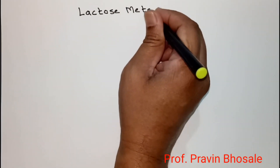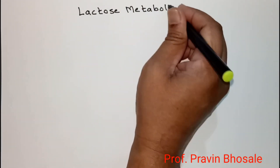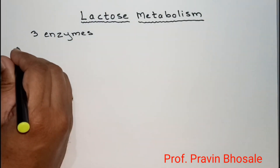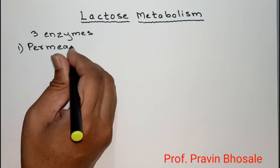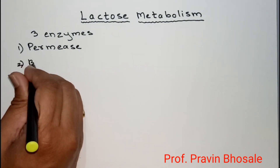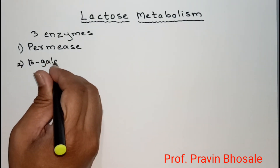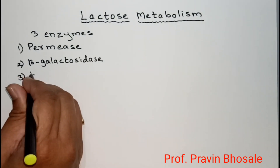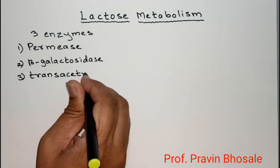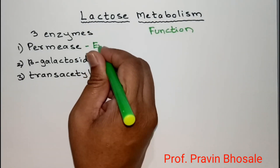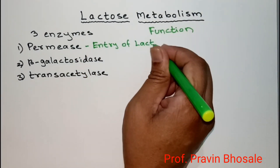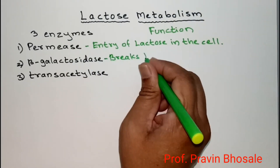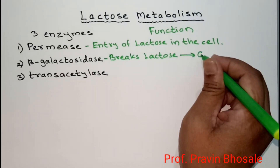Today's topic is lactose metabolism. In lactose metabolism, three enzymes play a very important role: first is permease, second is beta-galactosidase, and third is transacetylase. Permease does the entry of lactose into the cell; beta-galactosidase breaks lactose into glucose and galactose.